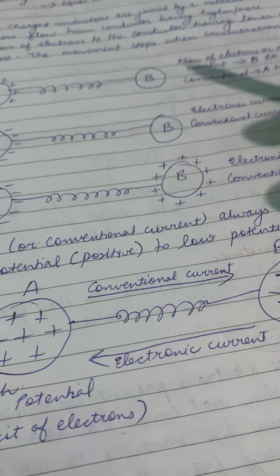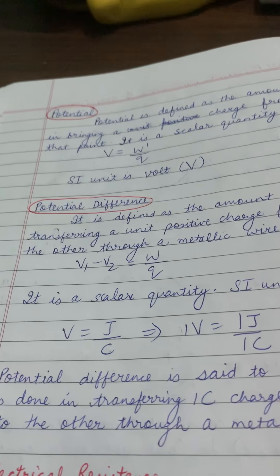Now, what is potential difference? It is the amount of work done in transferring a unit positive charge from one conductor to another through a metallic wire. If I transfer one positive charge from A to B through this wire, the work done per unit positive charge is my potential difference. It is denoted by V1 − V2 = W/Q, is a scalar quantity, and its SI unit is also volt. The SI unit of work is joule and of charge is coulomb, so one volt equals one joule per coulomb. Potential difference is said to be one volt if one joule of work is done in transferring one coulomb of charge from one conductor to another through a metallic wire.